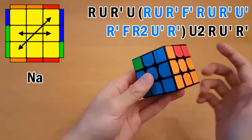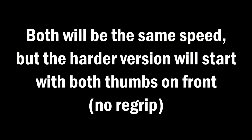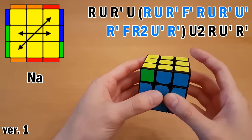So first for this N-perm where all the blocks are on the right side, I'll show the same algorithm done two different ways for two different levels of difficulty. Both will be the same speed but the harder version will start with both thumbs on front which means you often don't have to re-grip before you start, which is a slight optimization.